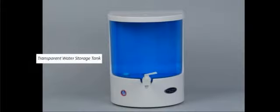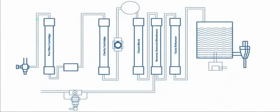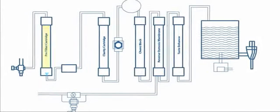It has a transparent water storage tank, automatic water level sensor, and a dual flow tap. Water first goes through the inlet to the pre-filter cartridge.